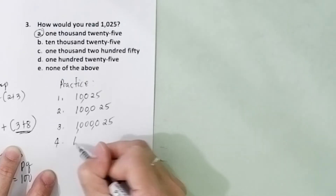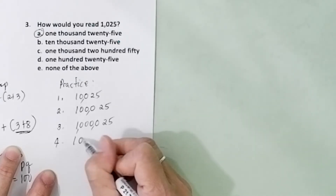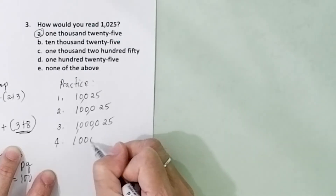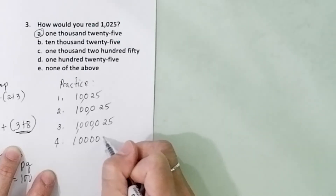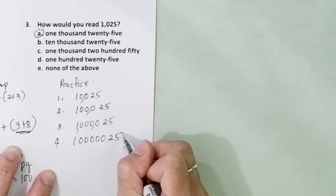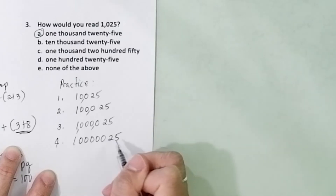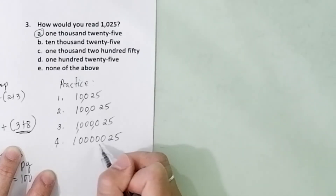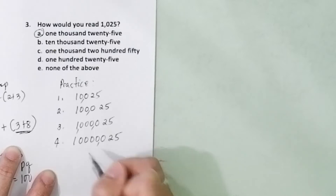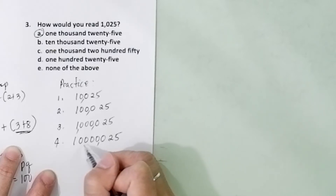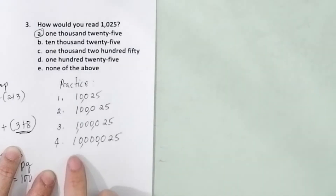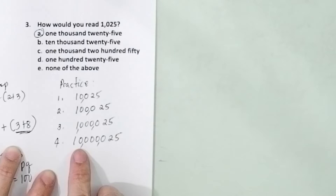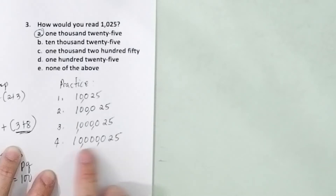Let's add one more zero — so now there are 5 zeros. Again, from the last number, count 1, 2, 3, put a comma, then 1, 2, 3, put a comma — and we have 10,000,025.